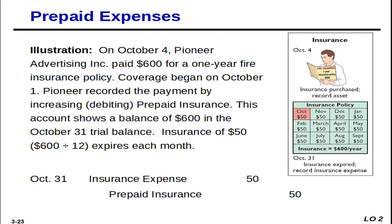Now for another prepaid expense example: On October 4th, Pioneer Advertising Inc. paid $600 for a one-year fire insurance policy; coverage began October 1st. Pioneer recorded the payment by debiting Prepaid Insurance. The account shows a balance of $600 in the October 31st trial balance. Insurance of $50 expires each month — $600 divided by 12 months equals $50 per month.